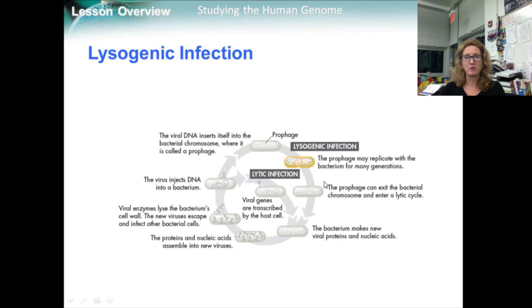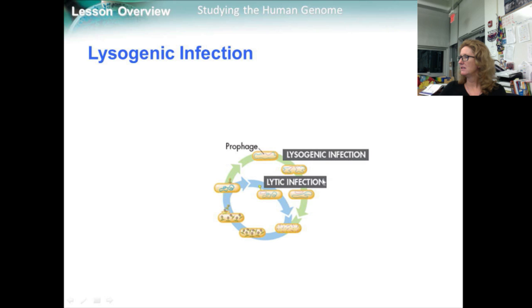Influences from the environment, like radiation or heat, can trigger the prophage to become active. It then removes itself from the host cell DNA, directs the synthesis of new virus particles, and becomes an active lytic infection.